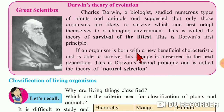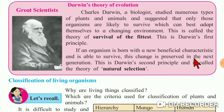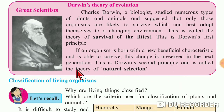Now, the second principle is the theory of natural selection. If an organism is born with a new beneficial characteristic and is able to survive, this change is preserved in the next generation. This is Darwin's second principle and is called the theory of natural selection.